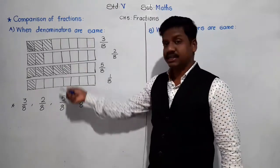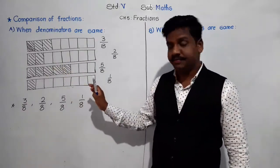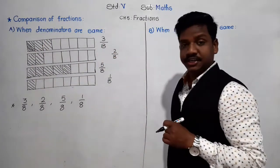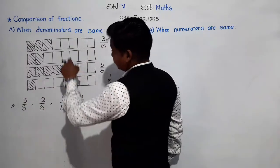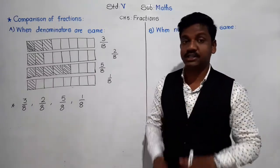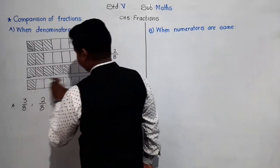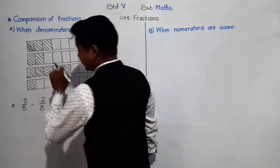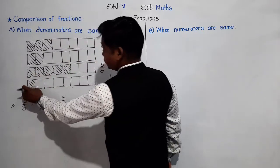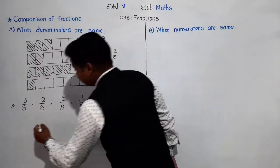You can state it because the chocolates are the same and the equal parts are the same — 8 and 8. See the shaded portion: in which chocolate is the shaded portion the smallest? In the fourth one — only one part out of 8 equal parts is shaded. So this portion is the smallest, and the fraction 1/8 is the smallest.